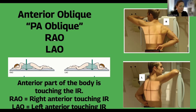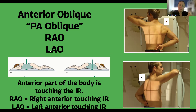RAO means the right anterior is closest, so the left is pulled away. Vice versa: LA means left anterior is towards the IR and the right will be pulled away.